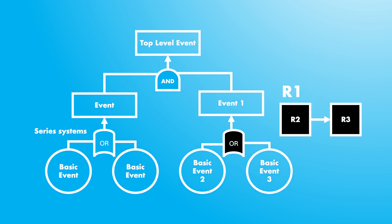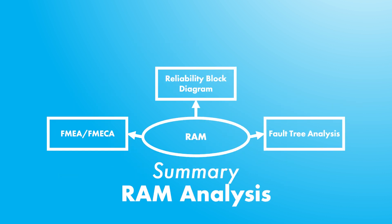Similarly, an OR connection becomes a series connection. In fault tree analysis, a series connection is represented by the logical OR gate — the upper event will occur if any of the lower events occur.